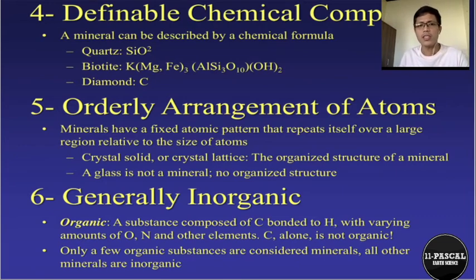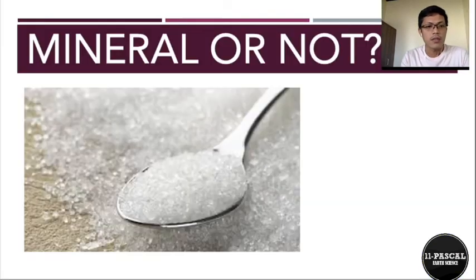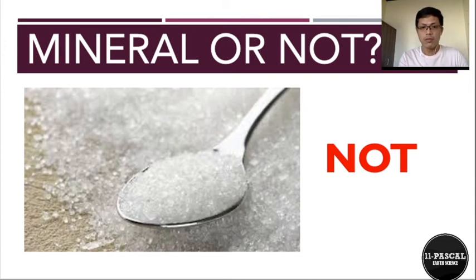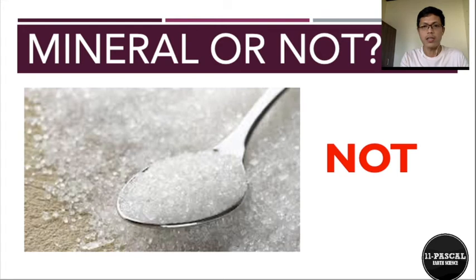An example of an organic substance is sugar. Sugar is not a mineral because it is organic — it is bonded with hydrogen and oxygen. The chemical formula for blood sugar is C₆H₁₂O₆, and the more complex structure is sucrose (table sugar). Therefore, we cannot consider it a mineral.